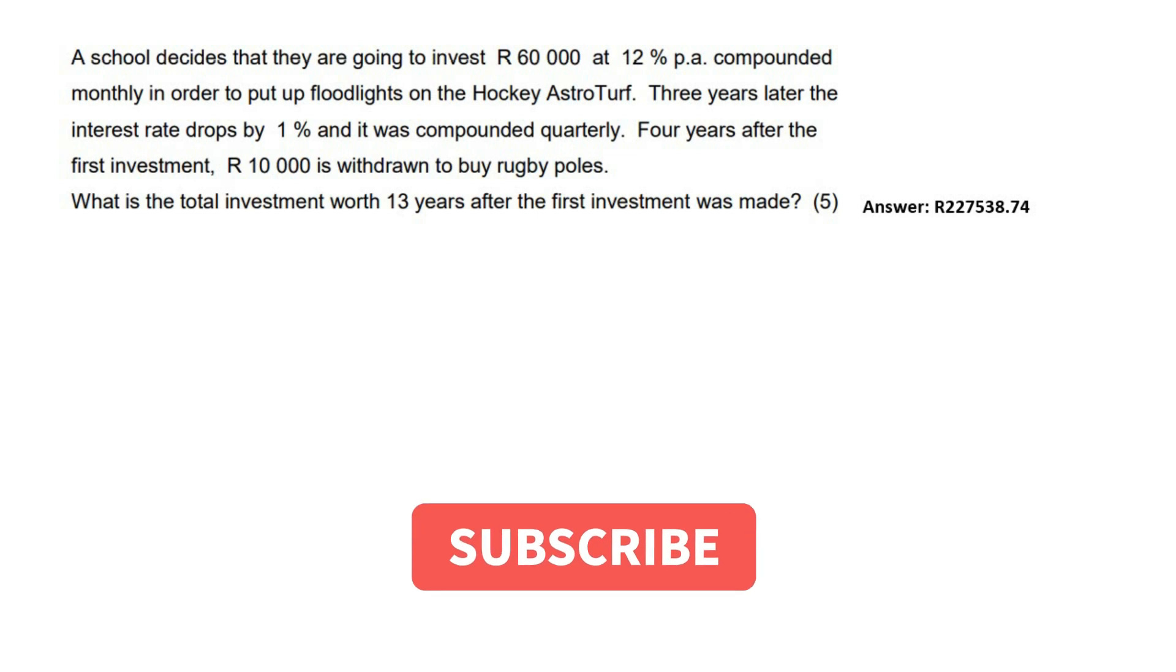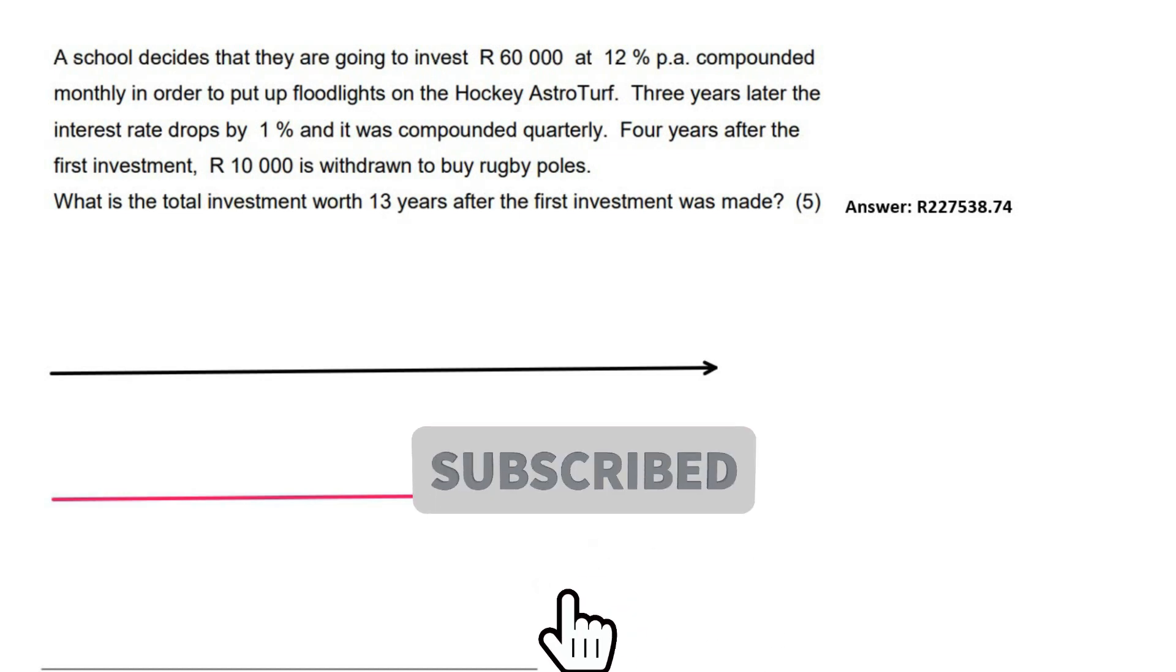So I think we can make a timeline for this one. I always like to make two timelines, one for the payments and one for the interest rate. It just helps keep things nice and clear. So we know that this question is about 13 years. So we're going to start at T0 and it would end off after 13 years.